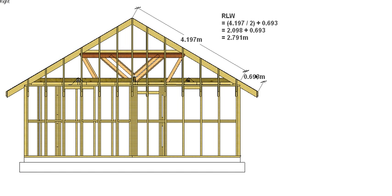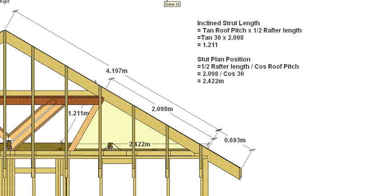Now we can work out the RLW — the Roof Load Width — for this roof. As covered in the RLW presentation, because we have a purlin in the middle and it's not a strutted ridge, we take the true rafter span, divide by two, and add the overhang. So 4.197 divided by 2 gives 2.098, plus 0.693, gives an RLW of 2.791m — you could round to 2.8, depending on what the next available RLW is in the span table.